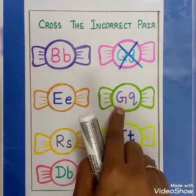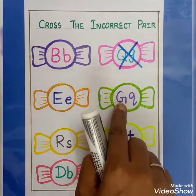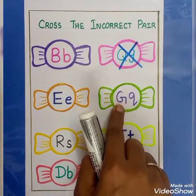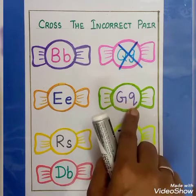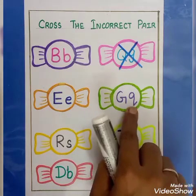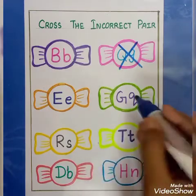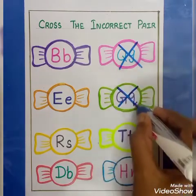Okay. Next one. This is capital letter G. This is small letter Q. This pair is correct? No. So we have to put cross.